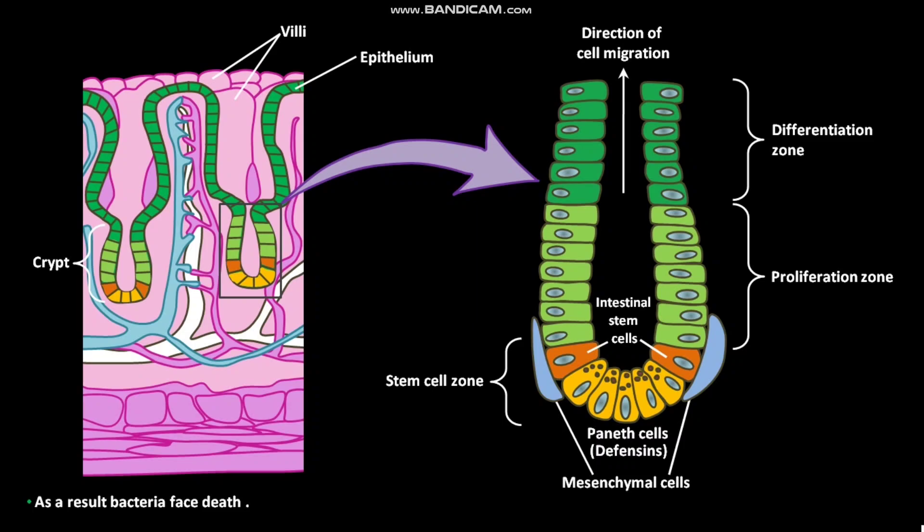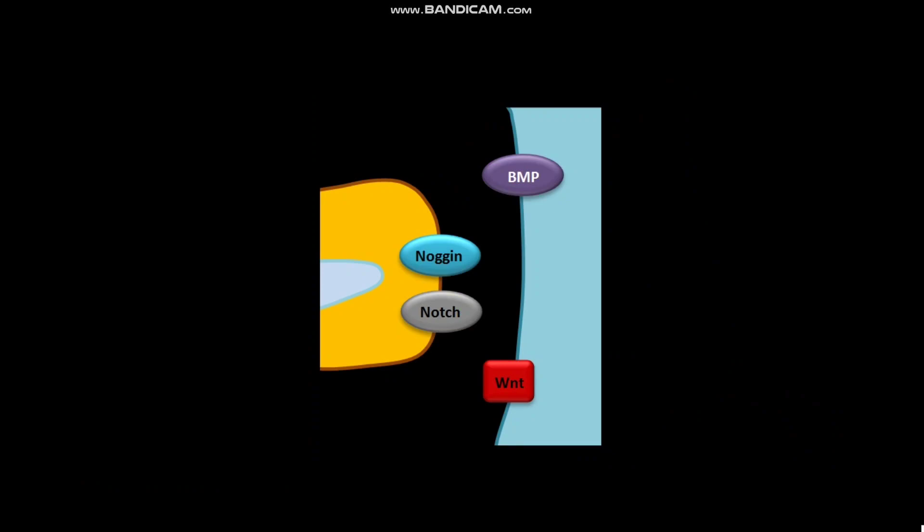Signaling events in the intestinal stem cell niche occur between intestinal stem cells and mesenchymal cells. WNT signals on mesenchymal cells promote intestinal stem cell fates. The transcription factor TCF activates beta-catenin. Interference with TCF blocks the function of beta-catenin. As a result, stem cell proliferation stops.